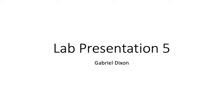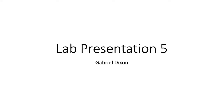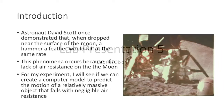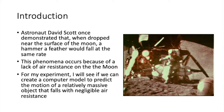Hello everybody, my name is Ross Dixon and this is my video lab report for Lab 5. During the Apollo 15 space missions, astronaut David Scott demonstrated that when dropped from near the surface of the moon, a hammer and a feather would fall at the same rate. This phenomenon occurred because of a lack of air resistance on the moon. For my experiment, I will see if we can create a computer program to predict the motion of a relatively massive object that falls with negligible air resistance.